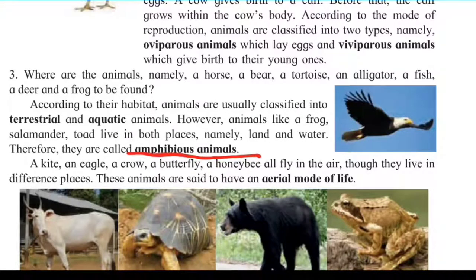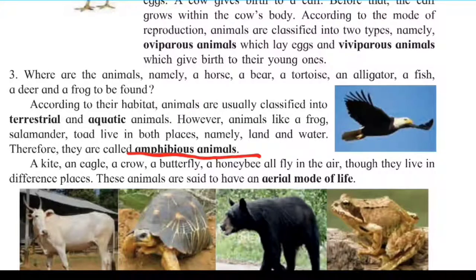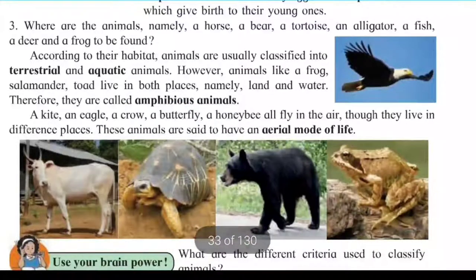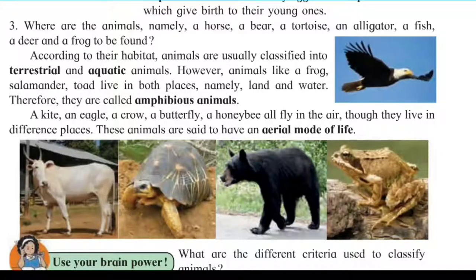The third habitat type is amphibious animals. There are also aerial animals — a kite, an eagle, a crow, a butterfly, a honey bee — all fly in the air. These animals are said to have an aerial mode of life.